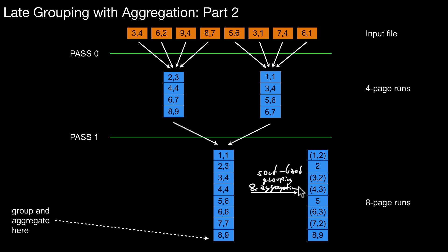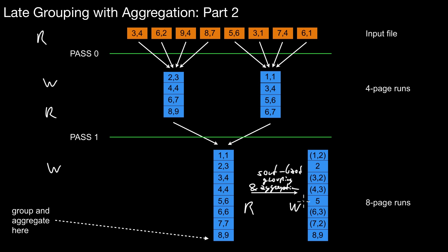That approach has some severe drawbacks, especially when you investigate the amount of I/O. For producing the initial runs, we read the input and write it in pass zero. The same happens in pass one — we read the two four-page runs, merge them in memory, and write them to disk. Then we read again for grouping and aggregation, and write the output. Overall, that's three total reads and three total writes of all the data — a lot of I/O and a definite performance problem.